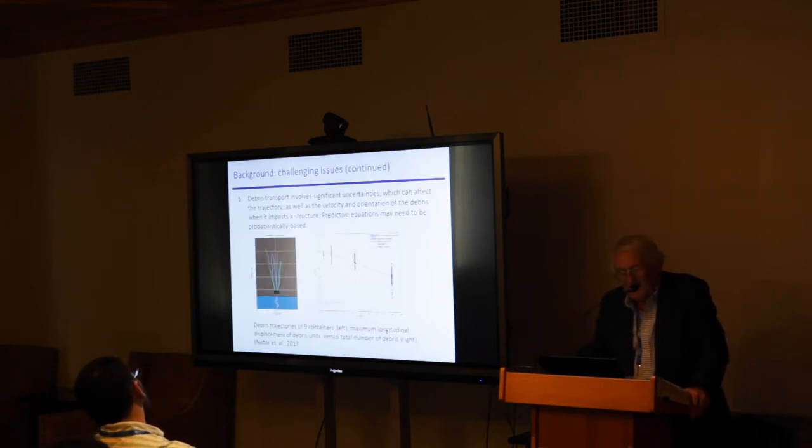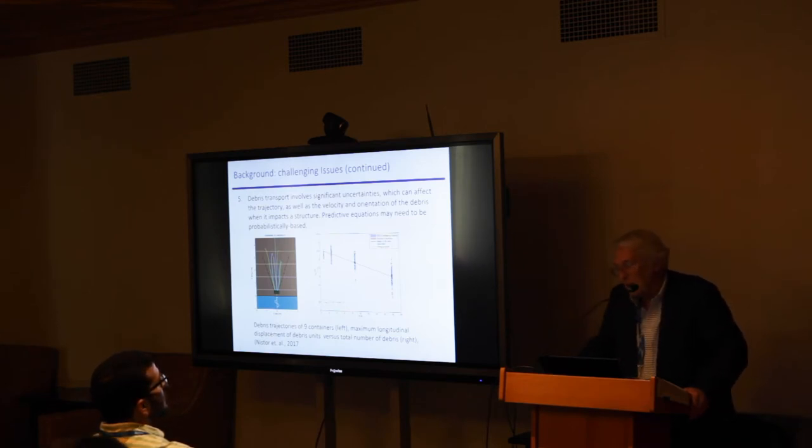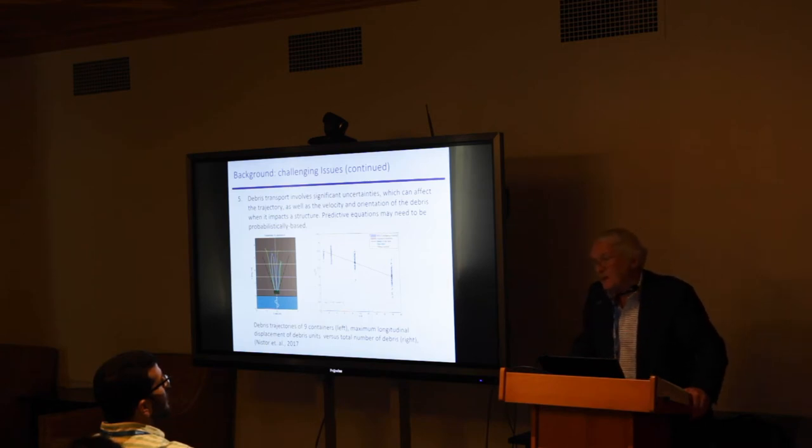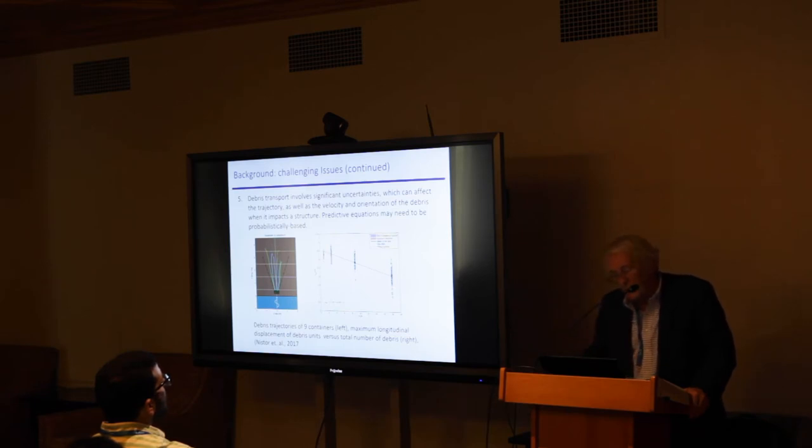Continuing the list of challenges, debris transport involves significant uncertainties which can affect the trajectory of the debris, as well as velocity and orientation of the debris. We can see from those equations that velocity is a key parameter in controlling the impact force. But then the angle of incidence, the orientation as the debris strikes the bridge is clearly also an important factor. Here are two sketches showing on the left the path of nine containers in a flume having different trajectories for the same wave. This is the work of Nistor in 2017.